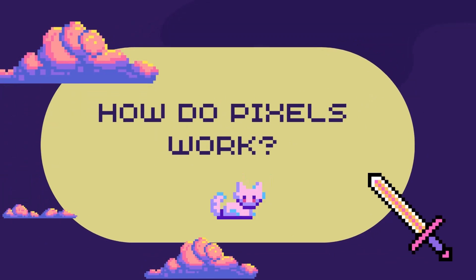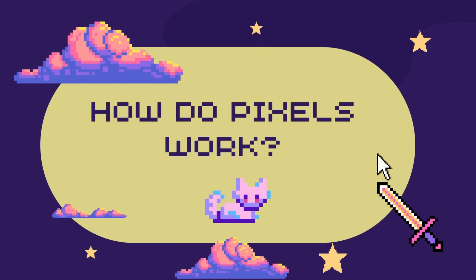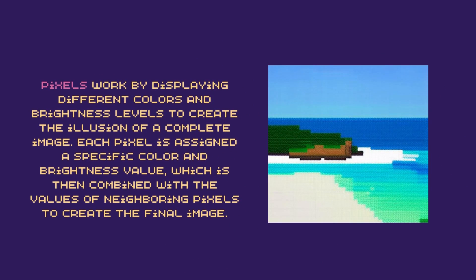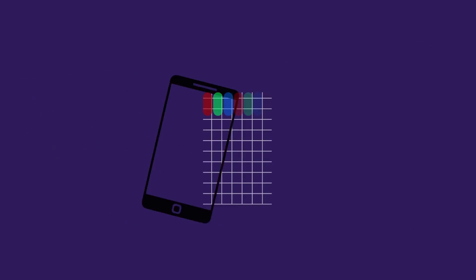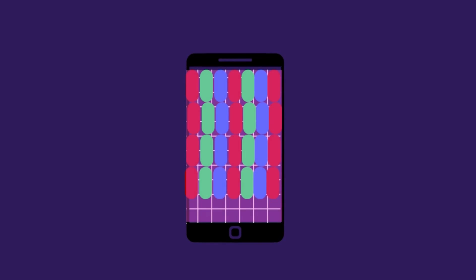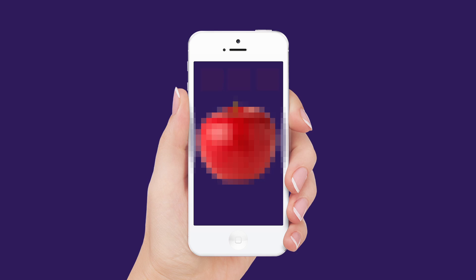How do pixels work? Pixels work by displaying different colors and brightness levels to create the illusion of a complete image. Each pixel is assigned a specific color and brightness value, which is then combined with the values of neighboring pixels to create the final image. When you look at an image on a computer or phone screen, you're actually looking at a grid of pixels illuminated in different ways. For example, if you're looking at a picture of a red apple, the pixels that make up the apple will be illuminated in various shades of red to create the illusion of a complete apple.